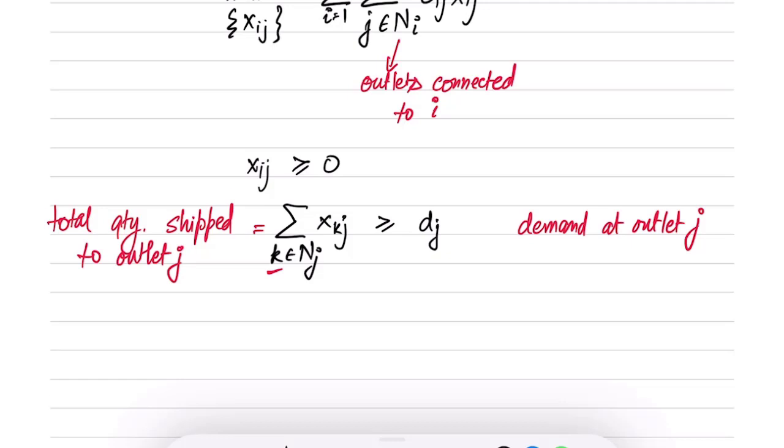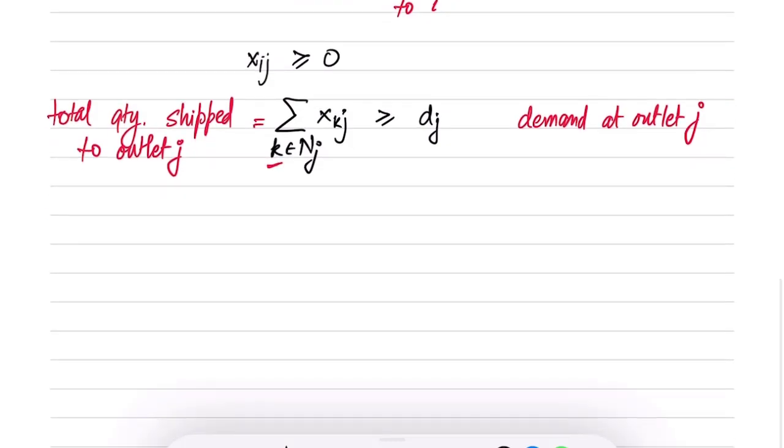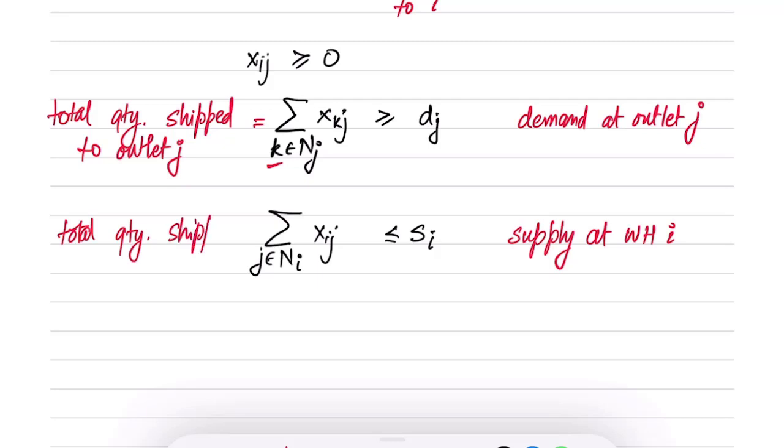Conversely I can only supply as much as I have. Therefore summation over j in ni, Xij should be less than or equal to si. This is the supply at warehouse i. And on this side we have the total quantity shipped out of warehouse i to all these outlets which are connected to warehouse i.